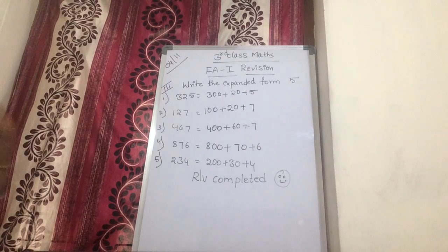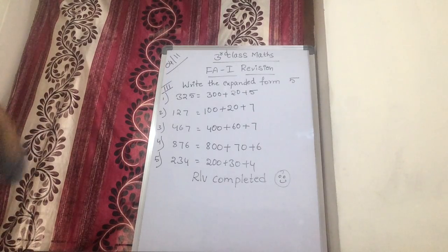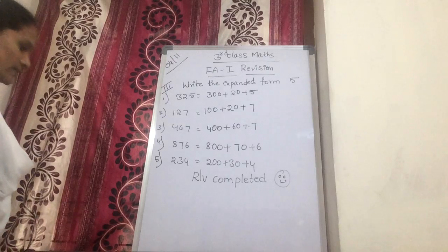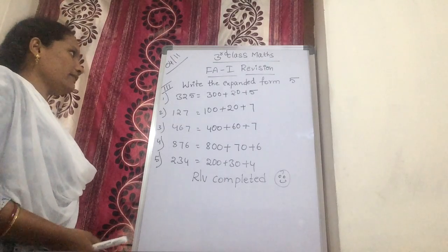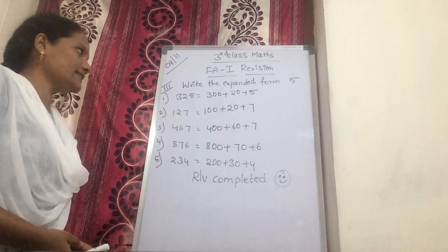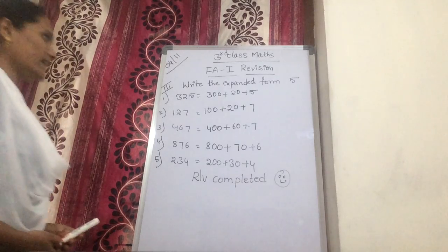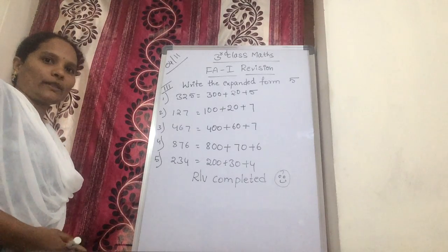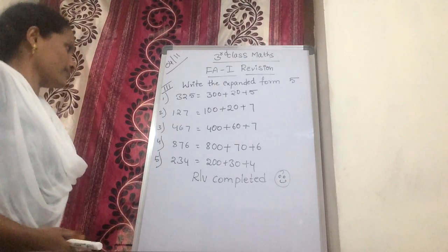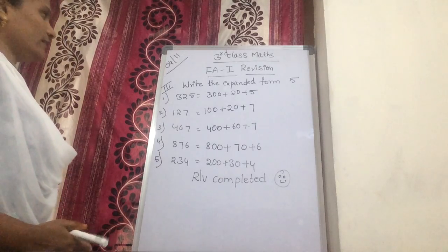There are three bits. First bit: write the number names. Second bit: write the place values of the given underlined digits. Third bit: write the expanded form.